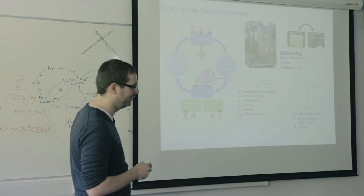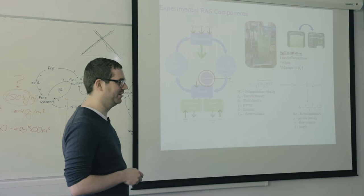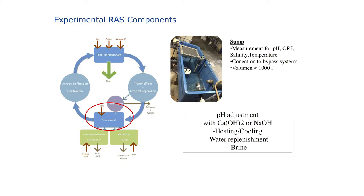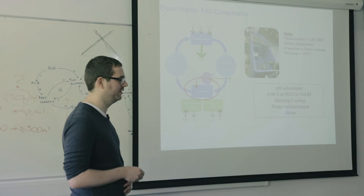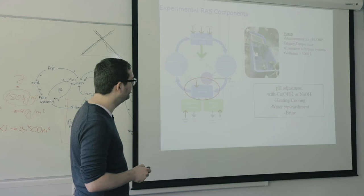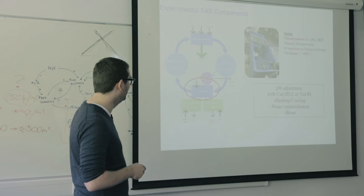If you engineer such a system you may need these calculations but they are not present in the model, so I will not introduce them further. This is our pump sump — we did a lot there. We adjusted our pH, adding calcium or NaOH to get our pH up. We had heating or cooling if needed, replenished water, and added brine. We also measured most parameters here so we don't have sensors at the fish tank. There is a volume of roughly 1,000 liters.